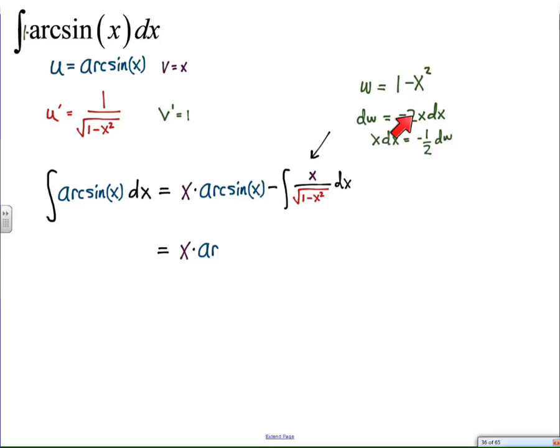It's going to make it easier to integrate. And then when I differentiate that, I get negative 2x dx. So the question is, what does dw equal, or rather, what does dx equal?